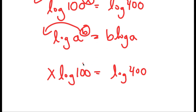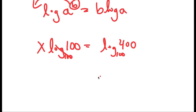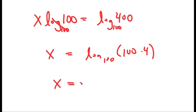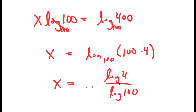I'm going to take log base 100 of both sides. Log base 100 of 100 is just 1. And log base 100 of 400 — well, 400 is the same thing as 100 times 4, so I can rewrite this as log base 100 of 100 times 4, which equals log of 4 over log 100, and I have 1 plus this because of the log base 100 of 100 term.